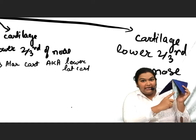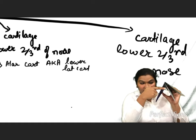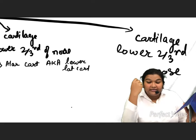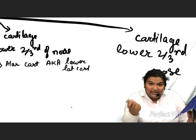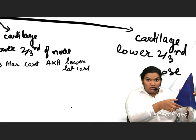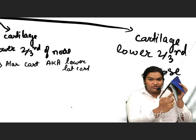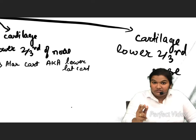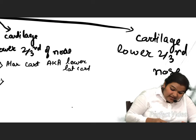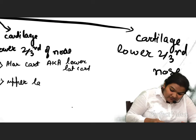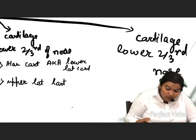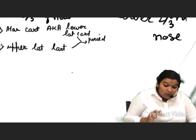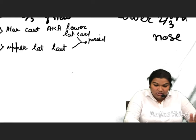It forms the lateral crus and the medial crus of the lower lateral cartilage, forming the lower part in a U-shape. It is also called as lower lateral cartilage or alar cartilage. Then we have the upper lateral cartilage. Both the lower lateral cartilage and the upper lateral cartilage are paired.